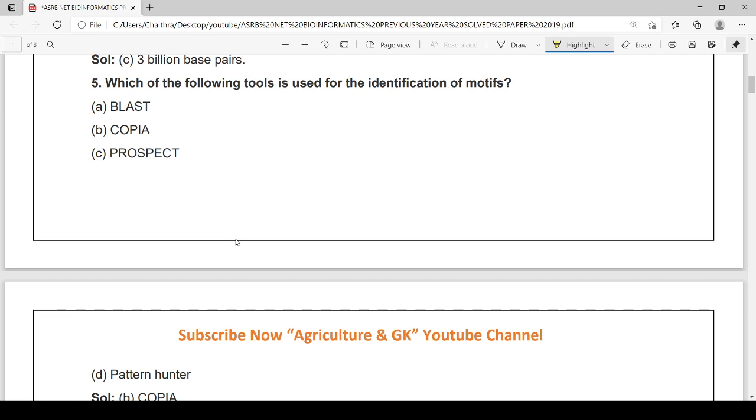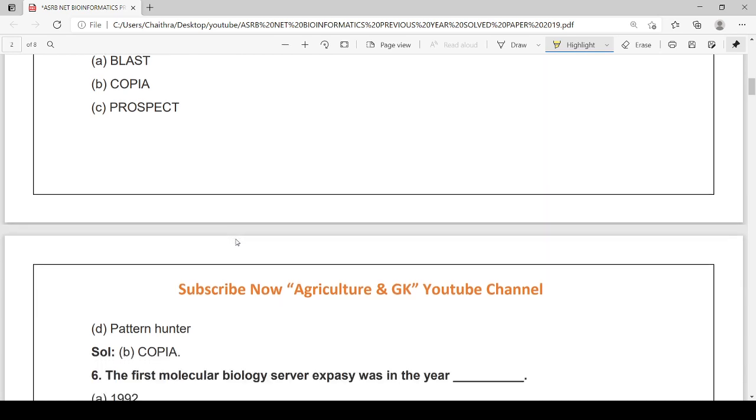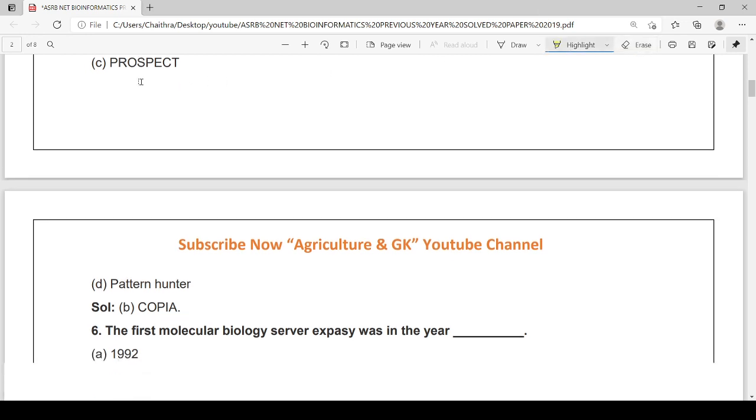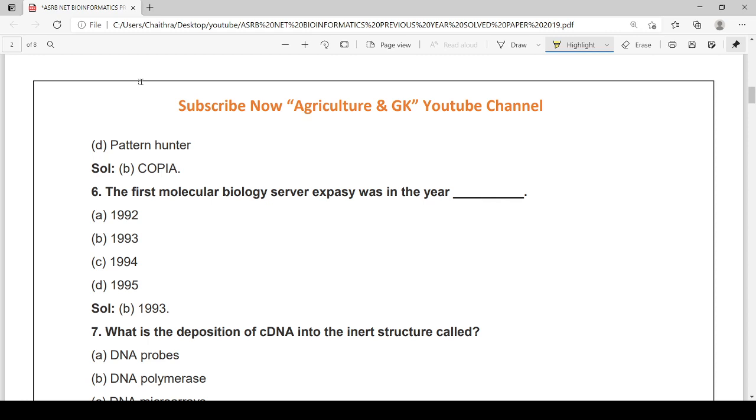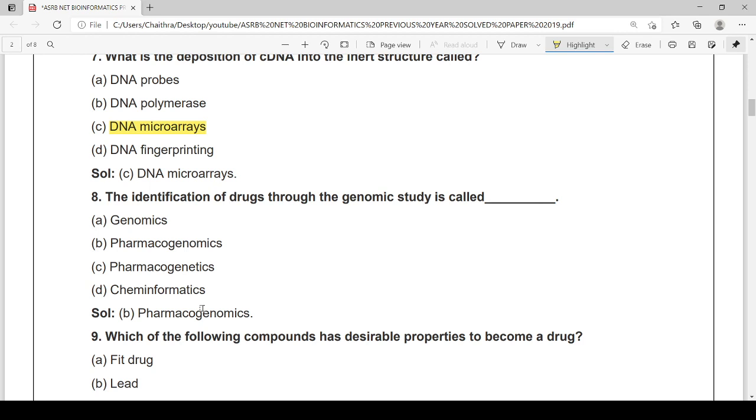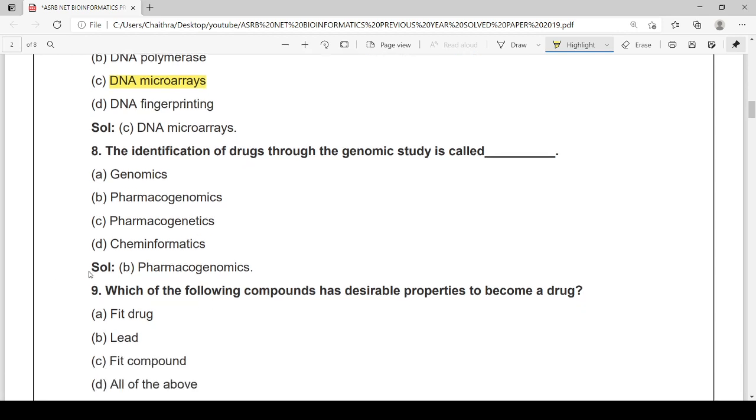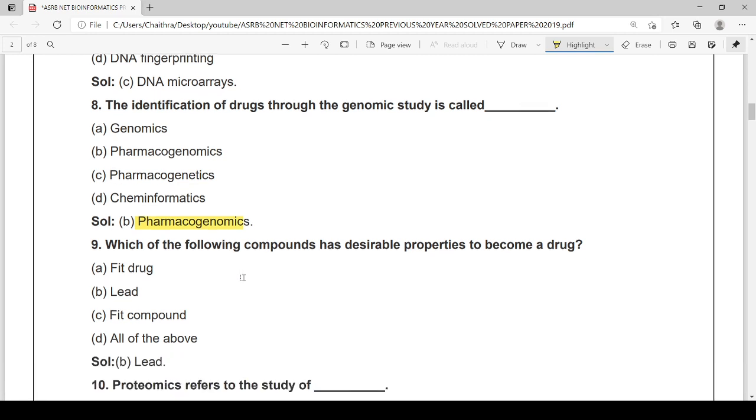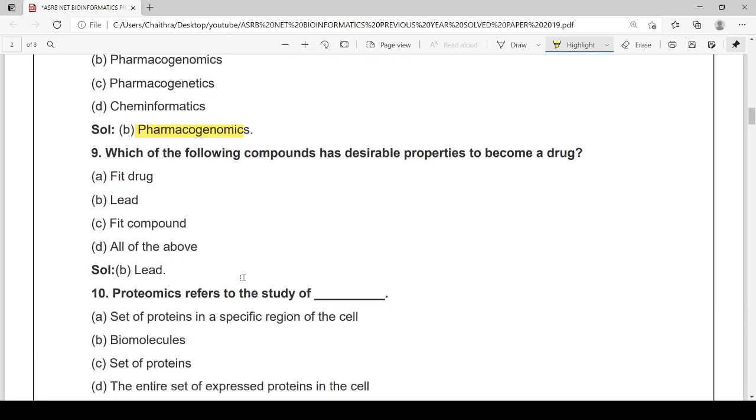Which of the following tools is used for identification of motifs? It is option B, COPIA. The first molecular biology server EXPASY was in the year 1993. What is the deposition of cDNA into the inert structure called? It is DNA microarrays.